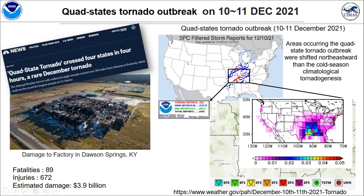The tornado reports are shown in this figure. EF4 and EF3 tornadoes were traveling from Arkansas to Kentucky — EF4 — which is a very unusual case. Also, this is the longest-traveling cold season tornado in the historical record.